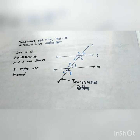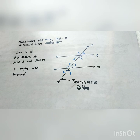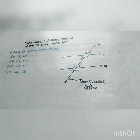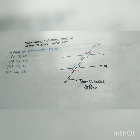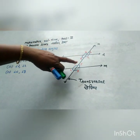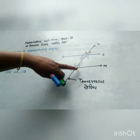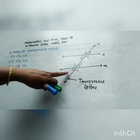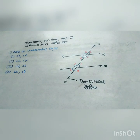Out of these angles, there are pairs of corresponding angles, pairs of alternate interior angles, pairs of alternate exterior angles, and pairs of interior angles on the same side of the transversal. The pairs of corresponding angles are: angle A and E, angle D and H, angle B and F, and angle C and G. There are 4 pairs of corresponding angles.